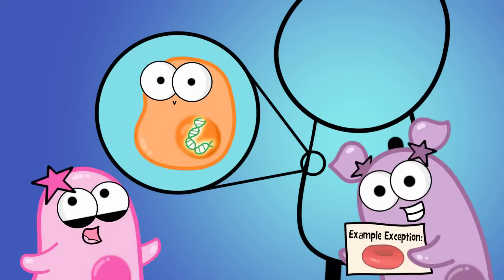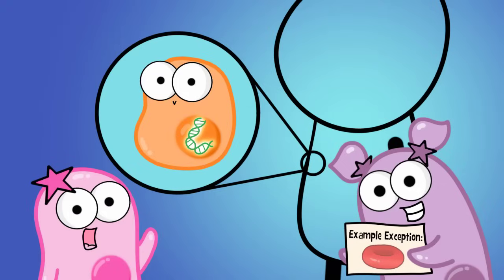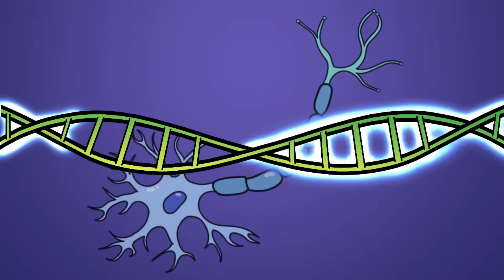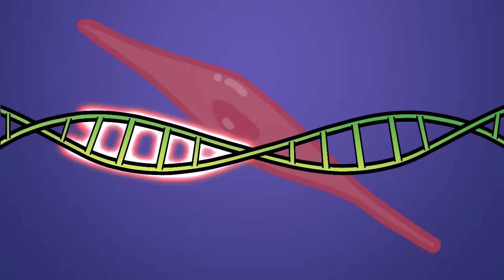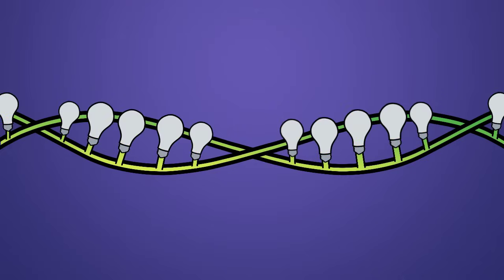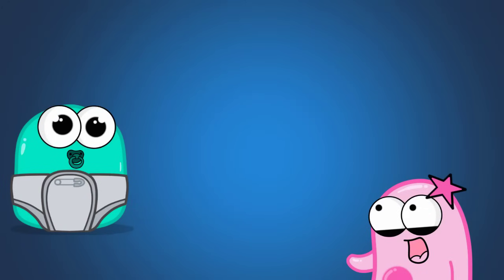A reminder about body cells: they all, with a few exceptions, contain all of your DNA. So neurons and muscle cells in your body don't have different DNA — they use different parts of your DNA. Genes are regulated, which means the genes can be turned on and off.